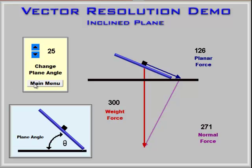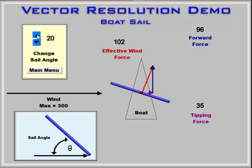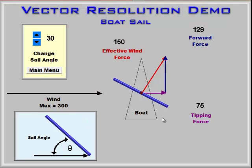Very similar to the first demonstration. Now we have the boat sail — we've got a wind, which in this case is coming from the left. All of these are set at 300 as the starting force. Now we have a sail, and as we change the sail angle, you can see that the 300 is broken down into two parts: one is the forward force driving the boat forward, and the tipping force, which is trying to tip the boat over. This is a nice demonstration to talk about vectors of the wind on the boat sail.